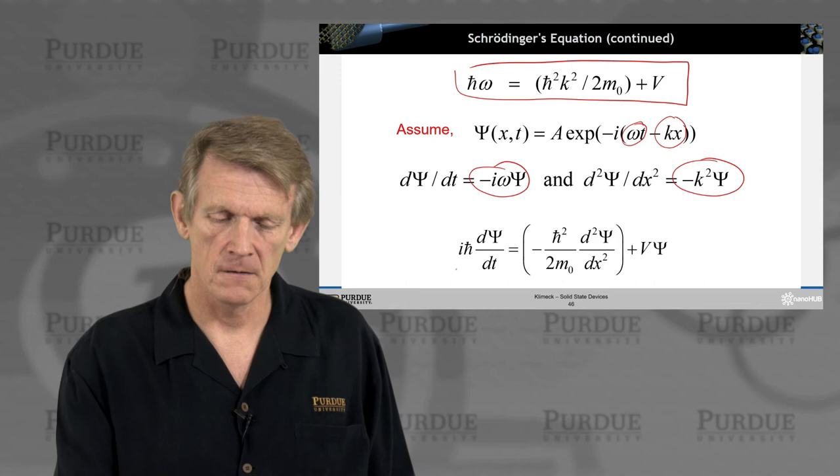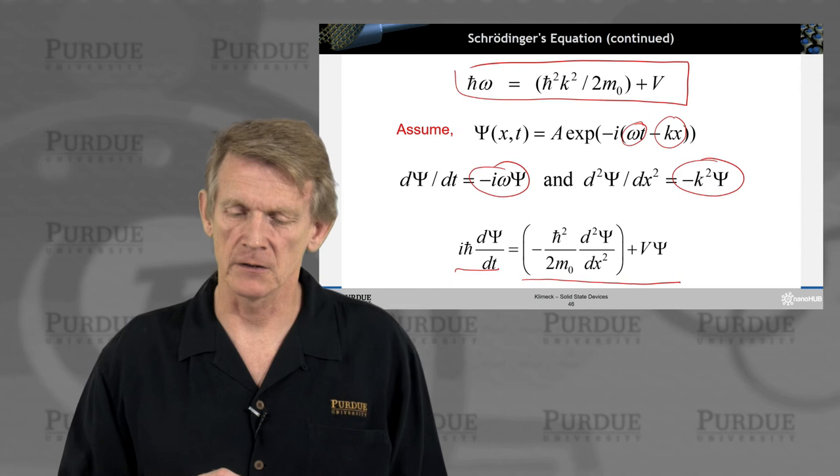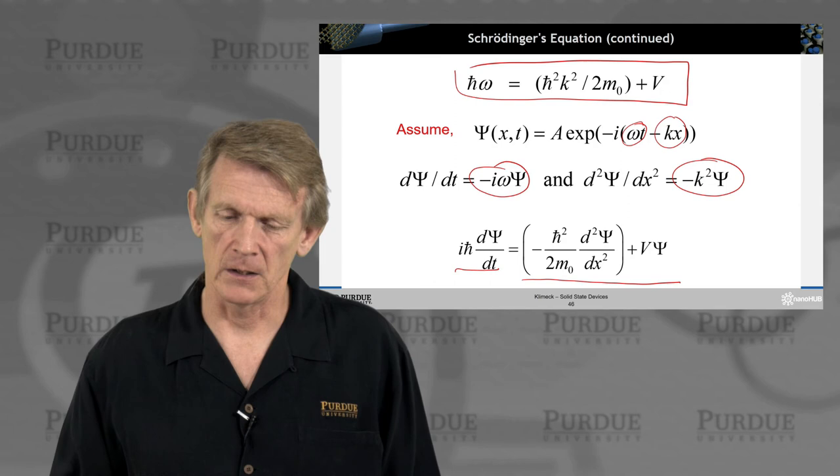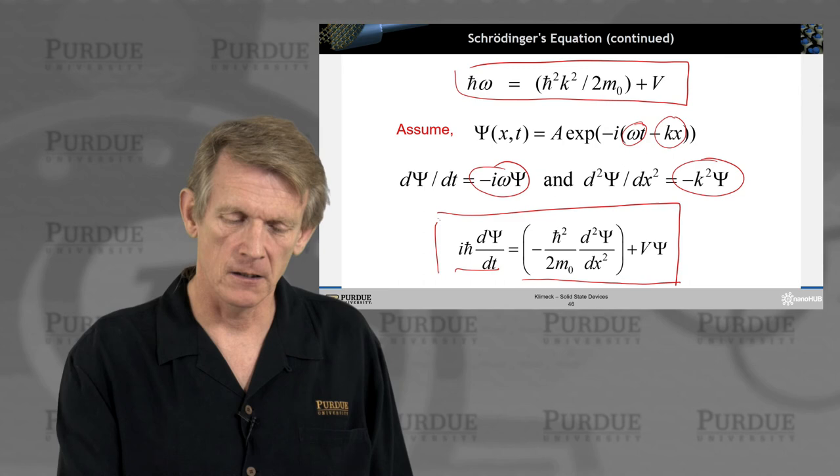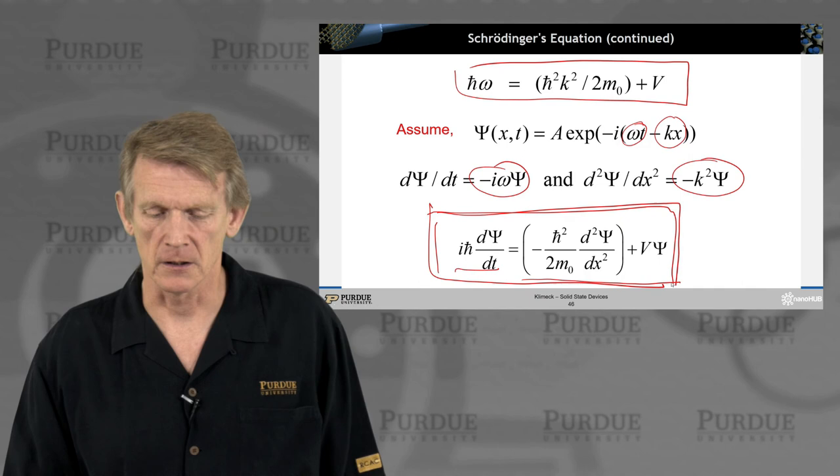You end up having an expression that ih bar d psi dt has a spatial dependent, a wave-like dependent of the second derivative of the psi and potential energy as well. So that's a very hand-waving, not a derivation of Schrodinger's equation. That is the time dependent, spatially dependent Schrodinger equation.